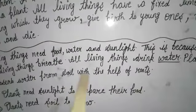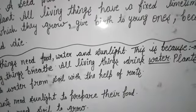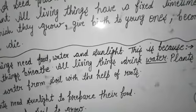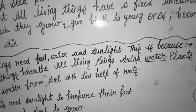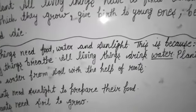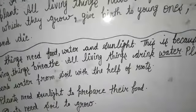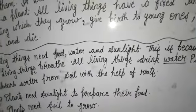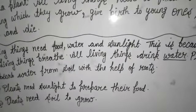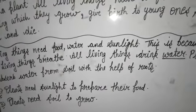Plants absorb water from the soil with the help of their roots — soil में जो water present होता है, वो plants में उनकी जड़ों के थ्रू जाता है. और जब plants को water मिल जाता है, उसके बाद वो अपना खाना sunlight और air की help से बनाने की process पूरी करते हैं. Plants need sunlight to prepare their food — plants को सूरज की रोशनी की जरूरत होती है अपना खाना बनाने के लिए, और वही खाना हम plant से लेते हैं. अगर sunlight नहीं होगी, तो plants खाना नहीं बना पाएंगे, और अगर plants खाना नहीं बनाएंगे, तो हमें खाना नहीं मिलेगा.